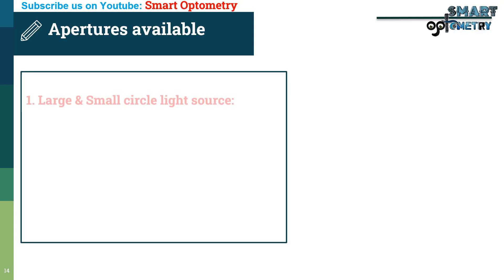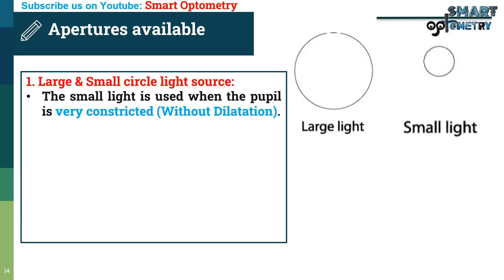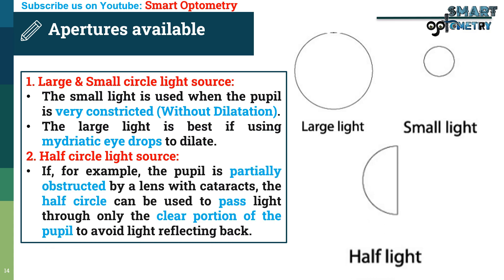Apertures available in the ophthalmoscope: 1. Large and small circle light source. The small circle light source is used when the pupil is very constricted or when examining the patient's fundus without dilation. The large circle light source is best when using mydriatic eye drops to dilate the pupil. 2. Half circle light source: if the pupil is partially obstructed by a lens with cataracts, the half circle can be used to pass light through only the clear portion of the pupil to avoid light reflecting back.